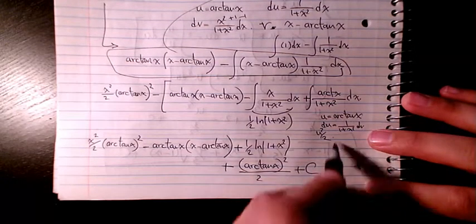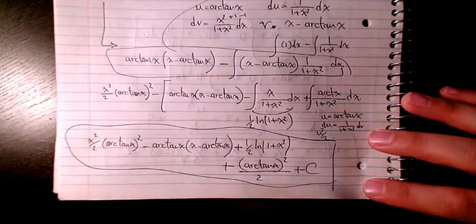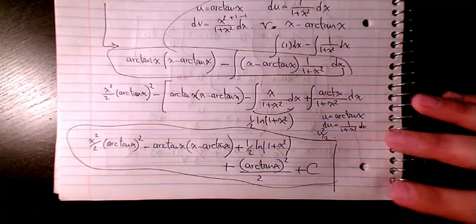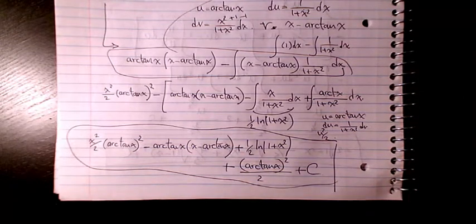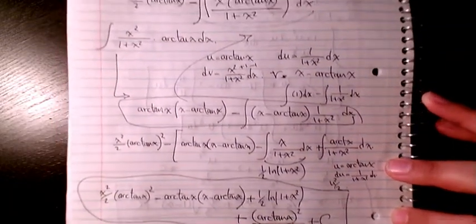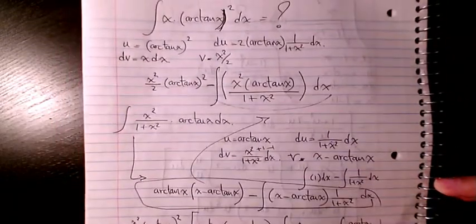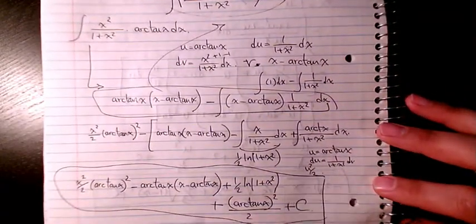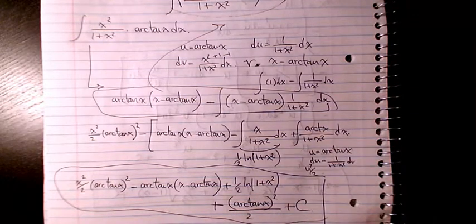That's pretty much the answer. If you want, you can simplify it further because you have arctan(x)² terms that can be combined. Please leave me a comment if you have any questions. I did two integrations by parts and two integrations by substitution. I hope you like this video and I'll come back with another video soon.